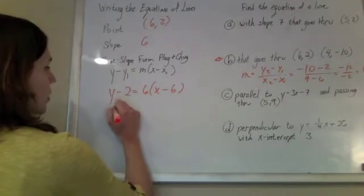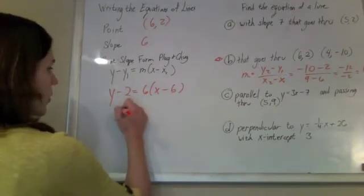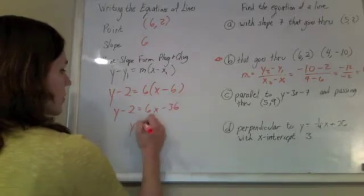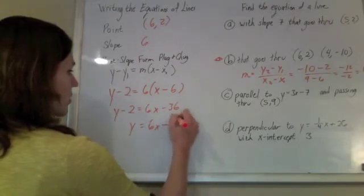y minus 2 equals 6 times x minus 6. And so, we could do y minus 2 equals 6x minus 36. So y equals 6x minus 34. And there's your equation.